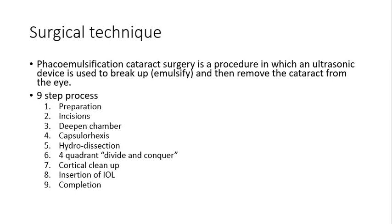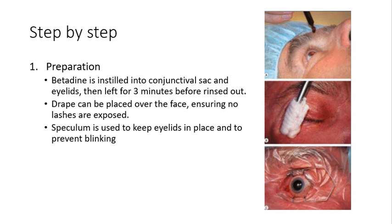There is a nine-step process from preparation all the way to completion. Step one is patient preparation: betadine, which is povidone iodine five percent, is put into the conjunctival sac and around the eyelids to sterilize the area. It's left in for three minutes and then rinsed out. A drape is placed over the patient's face ensuring no lashes are exposed, and a speculum is used to keep the eyelids in place and prevent the patient from blinking.